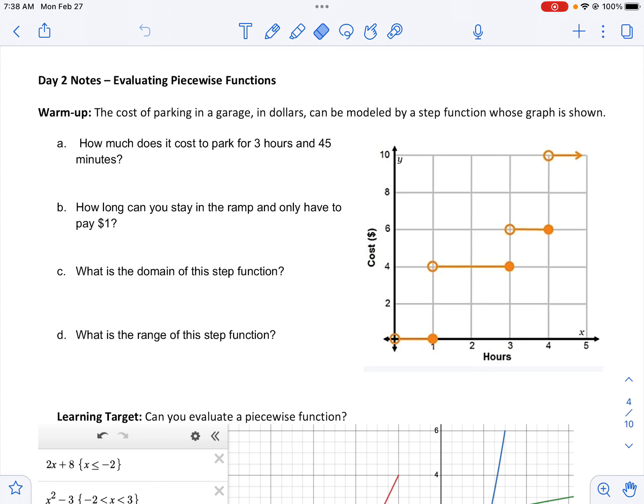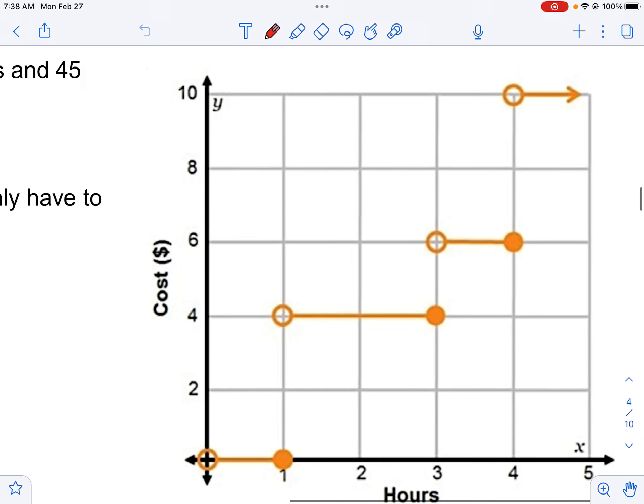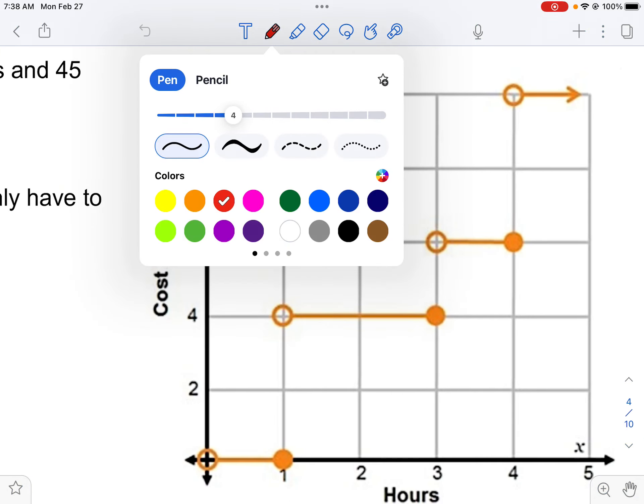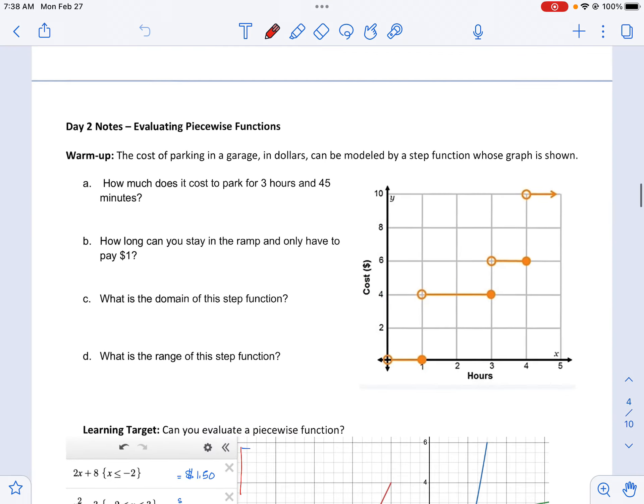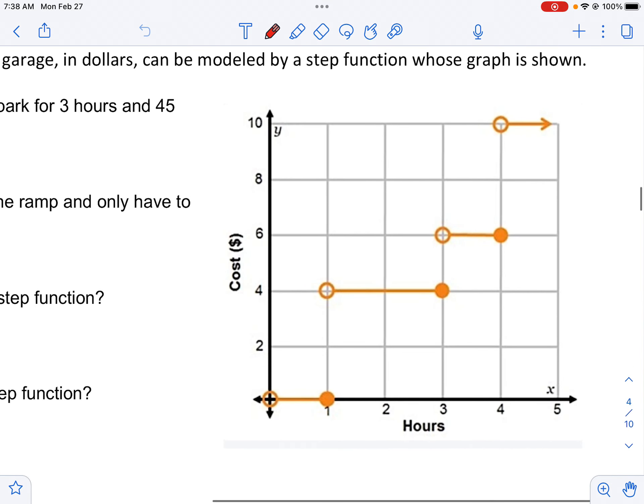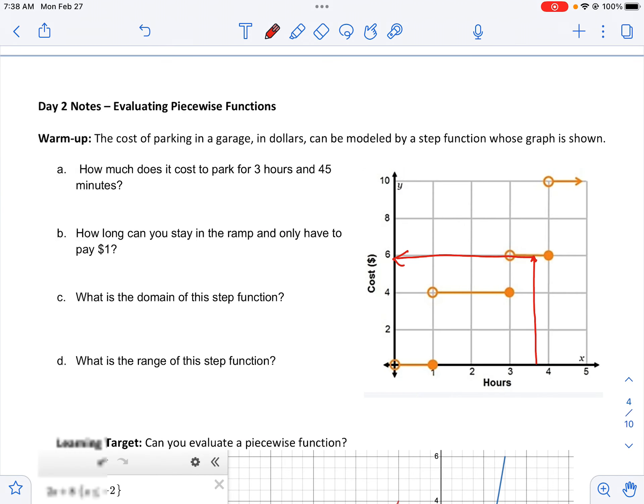Part a: How much does it cost to park for 3 hours and 45 minutes? We can see time is the independent variable and it's on the bottom. So for 3 hours and 45 minutes, that would put us somewhere in here. And we can see that that cost, the output or dependent variable, is $6.